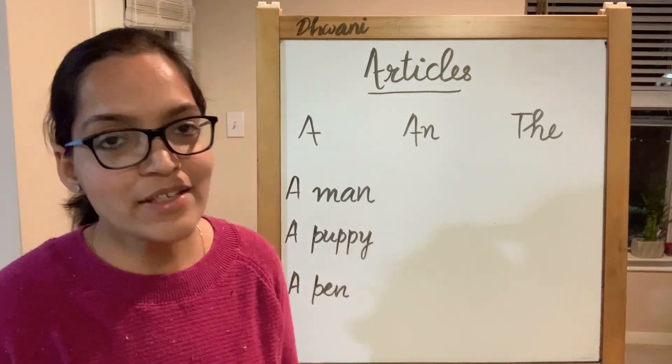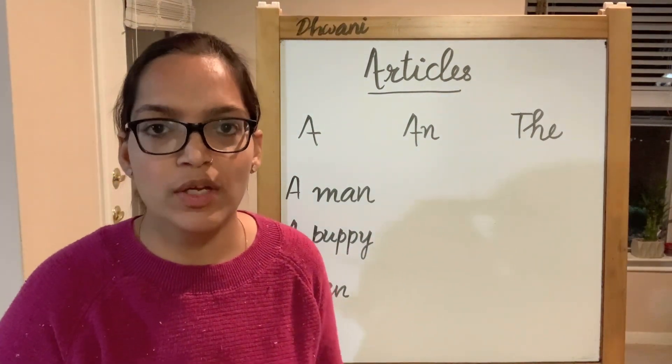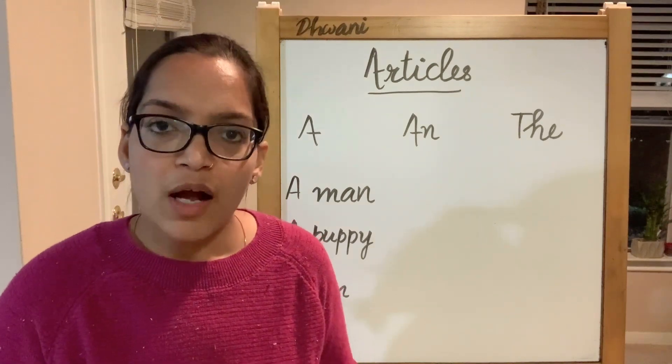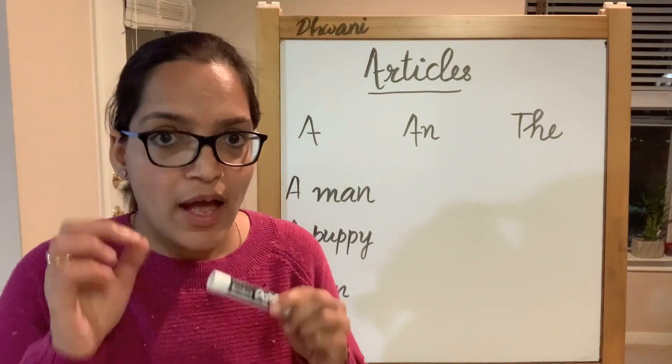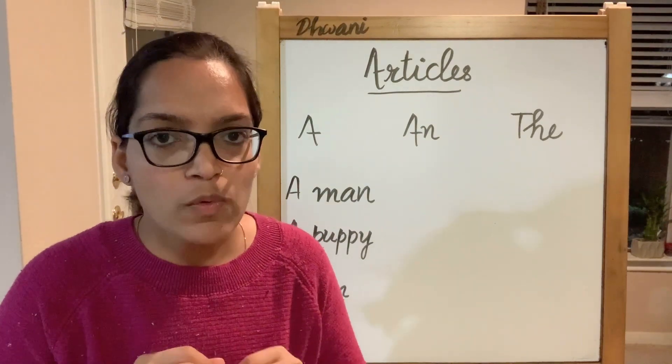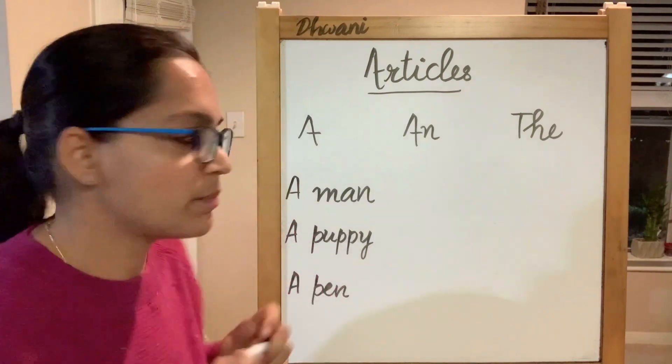An is used before nouns when the noun has a vowel sound. Let's take some examples.